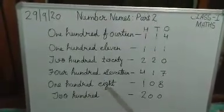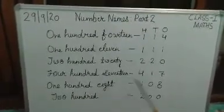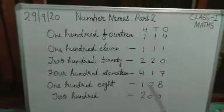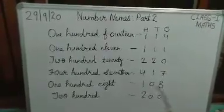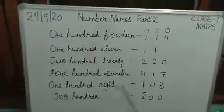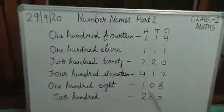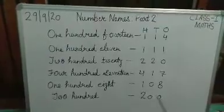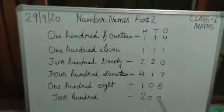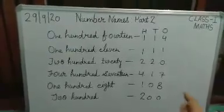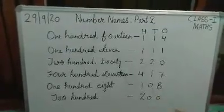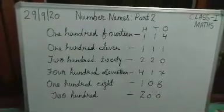108. And 200 — 2, double zero. Okay, I think you have understood. Thank you.